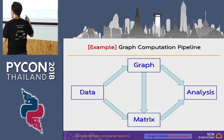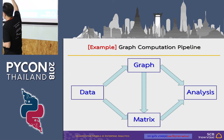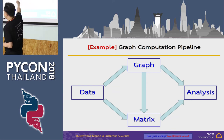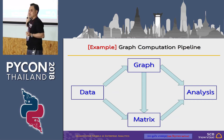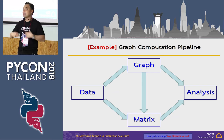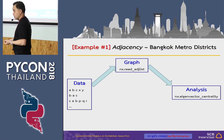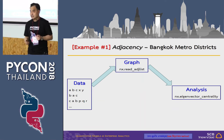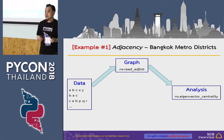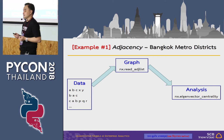For the programmers, there is a pipeline: data, to graph, to matrix handling, to analysis. Sometimes I go to the graph first, sometimes to the matrix. This is the pipeline of the talk. The first example is called adjacency.